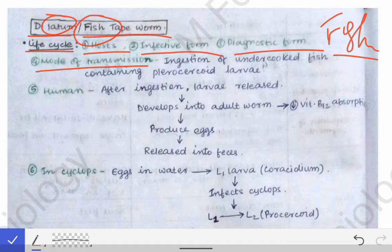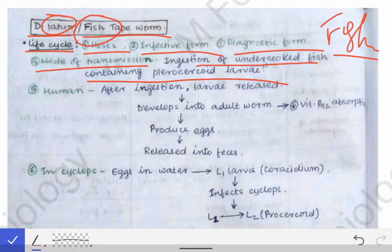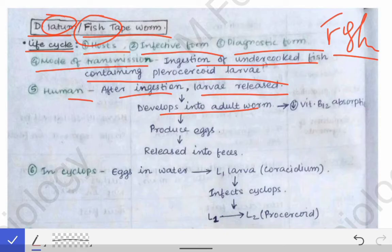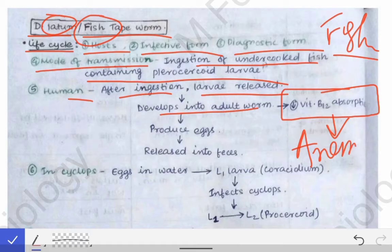The mode of transmission of Diphyllobothrium latum is by ingestion of undercooked fish containing the plerocercoid larva, which is the third-stage larva. When the human ingests that fish, the larva is released and develops into an adult worm. That adult worm decreases the absorption of vitamin B12, causing anemia, which is why we see anemia in cases of Diphyllobothrium latum infestation.